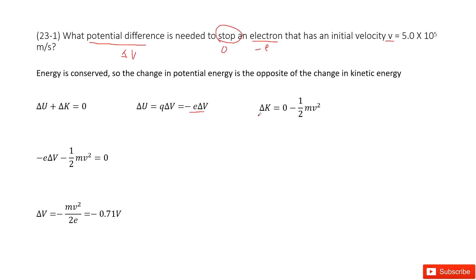Next, the change of kinetic energy. We use the final speed zero, so it's 0 minus 1/2 m v squared for the initial speed.